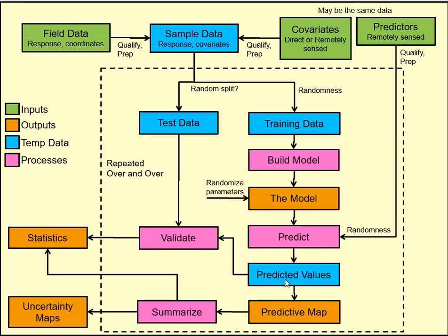That gives us our predicted values. We validate those against our test data to see if the model is not only predicting the data we trained it on, but also predicting the test data. Ideally, test data comes from a new external dataset that wasn't part of the initial sample — that's rare but the best case. This validation produces statistics, and we can also produce a predictive map.